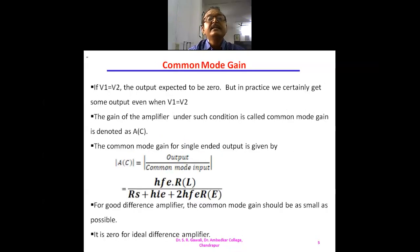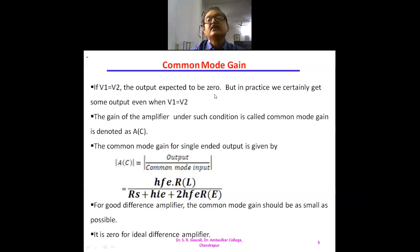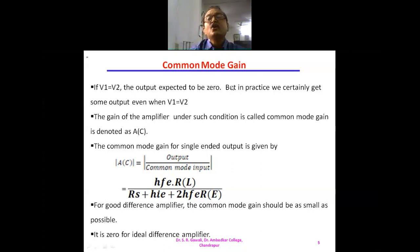Now we will study the common mode gain. If V1 and V2 are both equal, the output is expected to be zero in the difference amplifier. When both inputs applied at terminals IP1 and IP2 are the same — V1 equal to V2 — the output of the difference amplifier is expected to be zero. But in practice, we certainly get some output even when V1 equals V2. The gain of the amplifier under such condition is called the common mode gain.